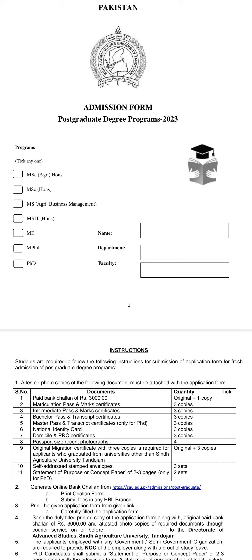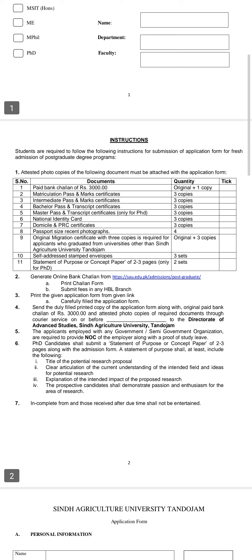This video provides full details that will be beneficial for applicants. First, select the program you want to apply for — choose which faculty, which program, whether it is a Master's or PhD degree. Then proceed to the relevant department and faculty, and follow the instructions provided.